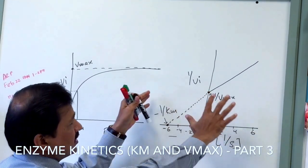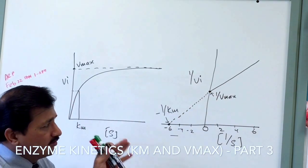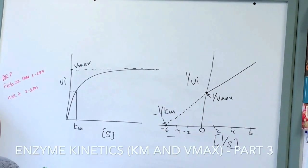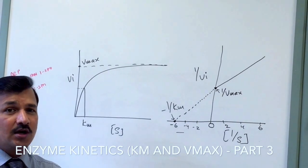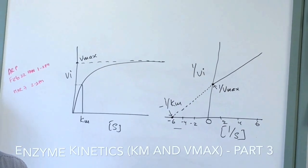These are the things that you need to expect in the Lineweaver-Burk plot. Now, let us see, taking an example of competitive and non-competitive inhibition.